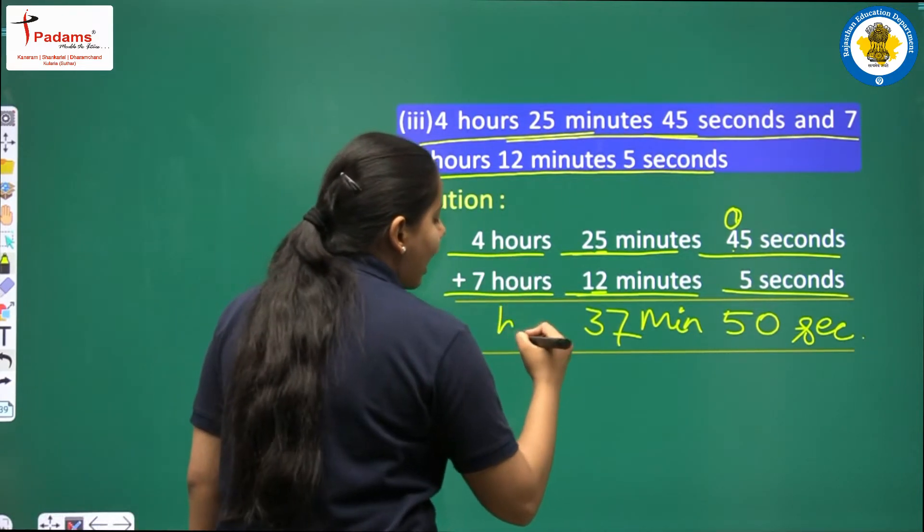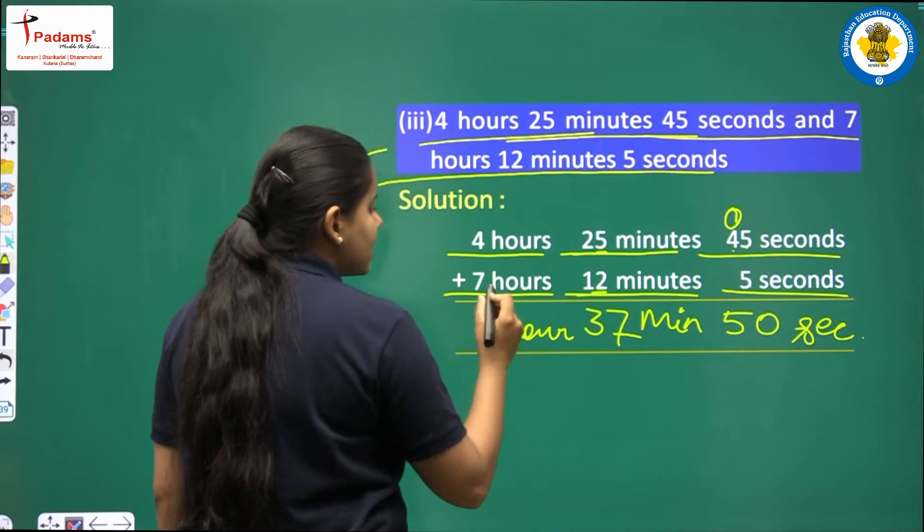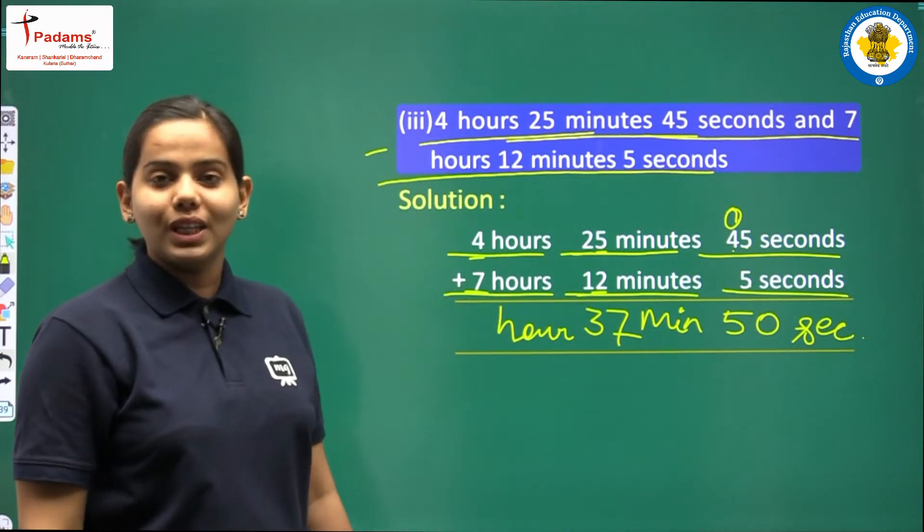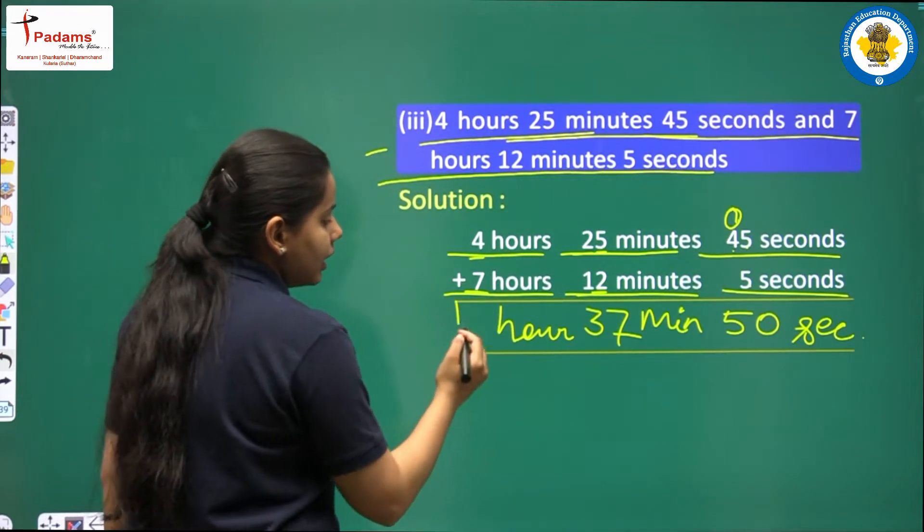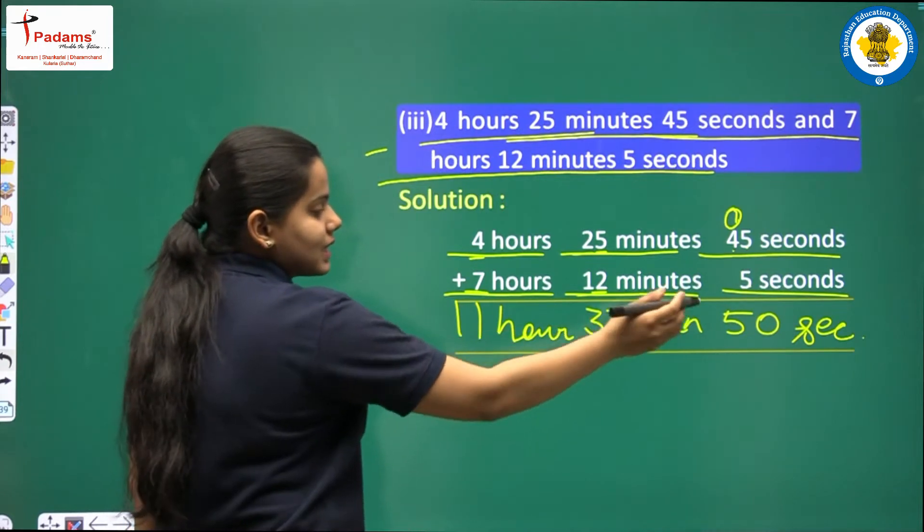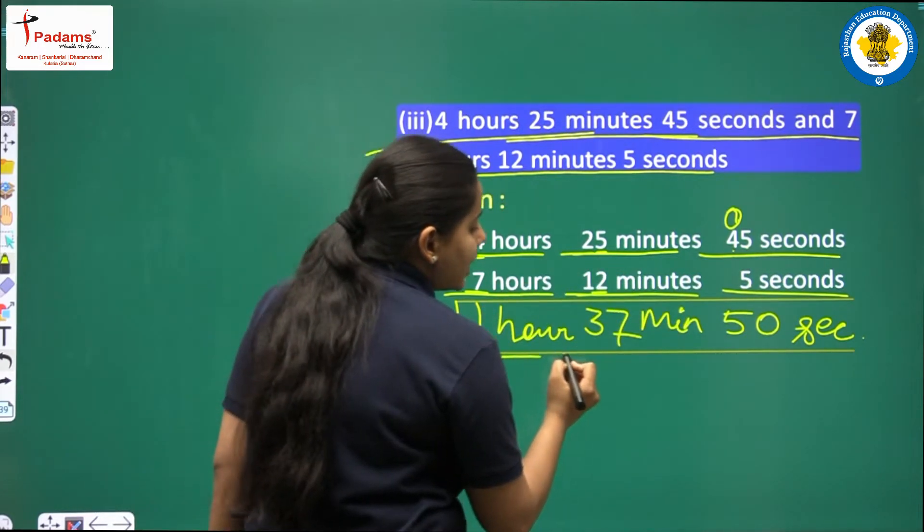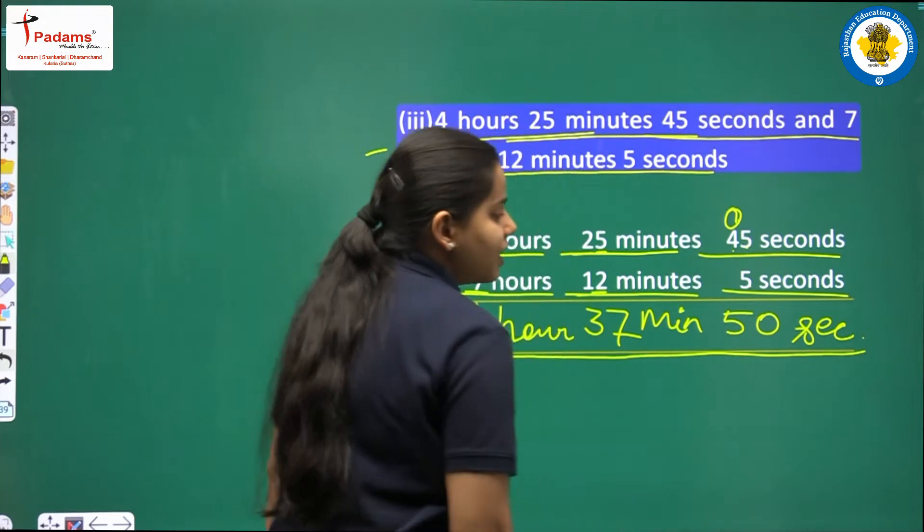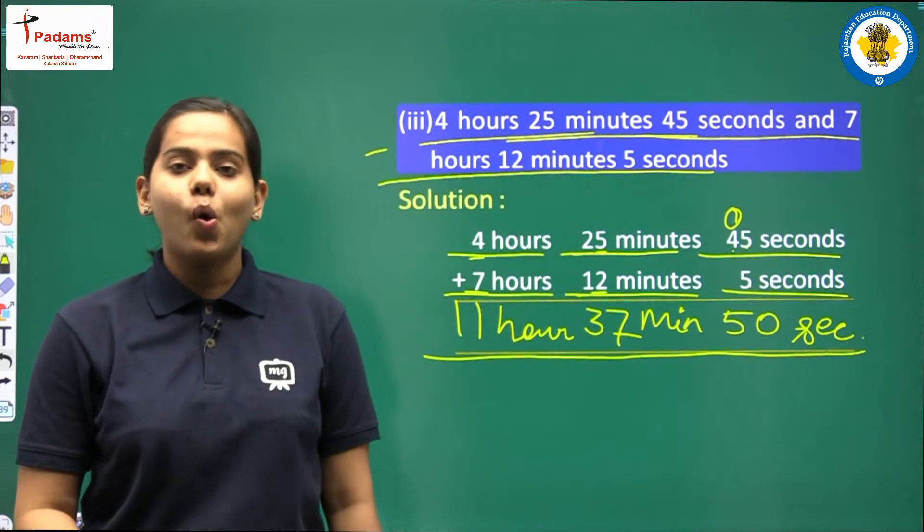Now let us solve for hours. In hours, 4 plus 7 we have to do, the answer will be 11. Here we are writing 11. Now this is our final answer. 11 hours 37 minutes and 50 seconds. We have added all the units.